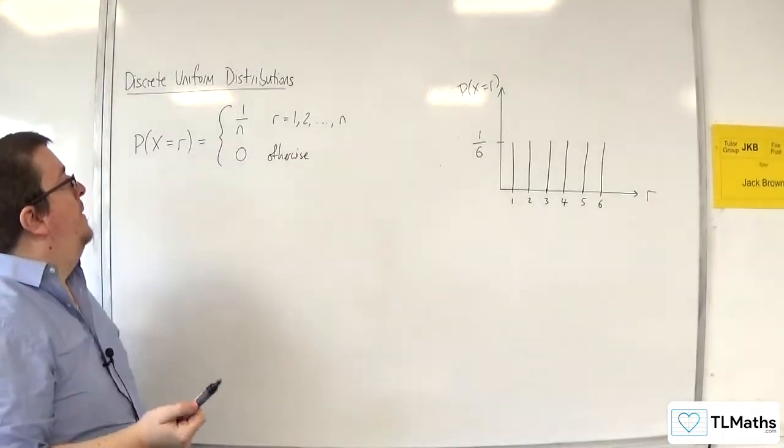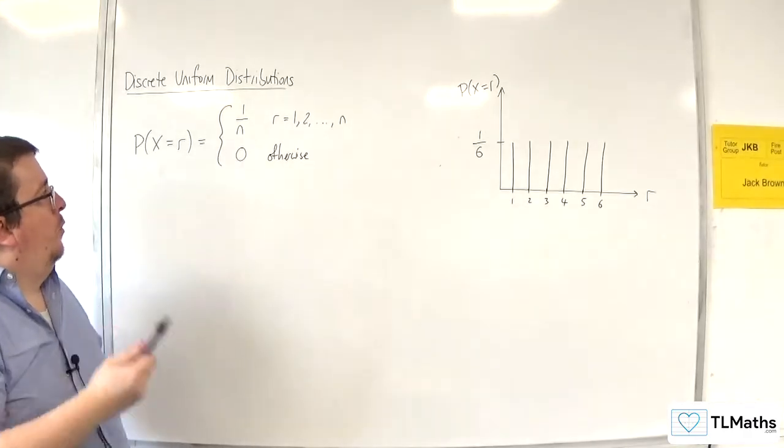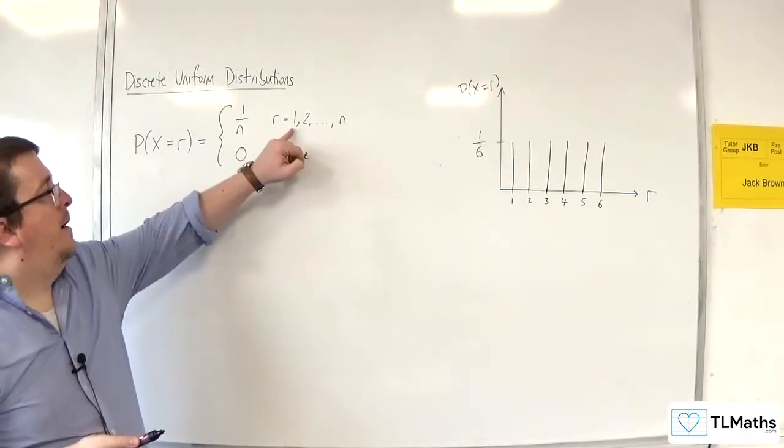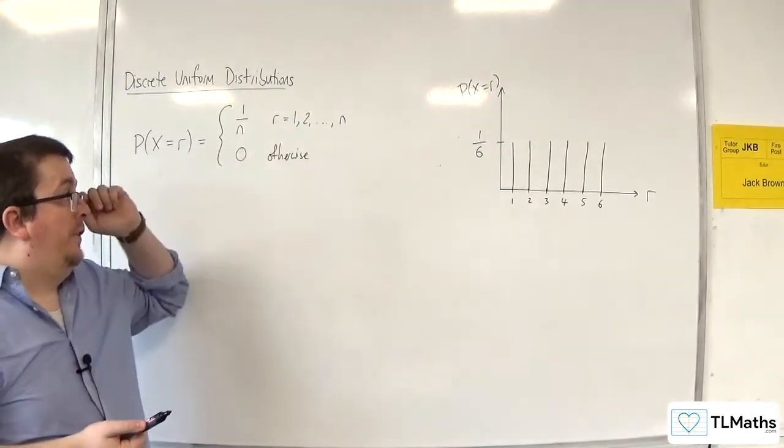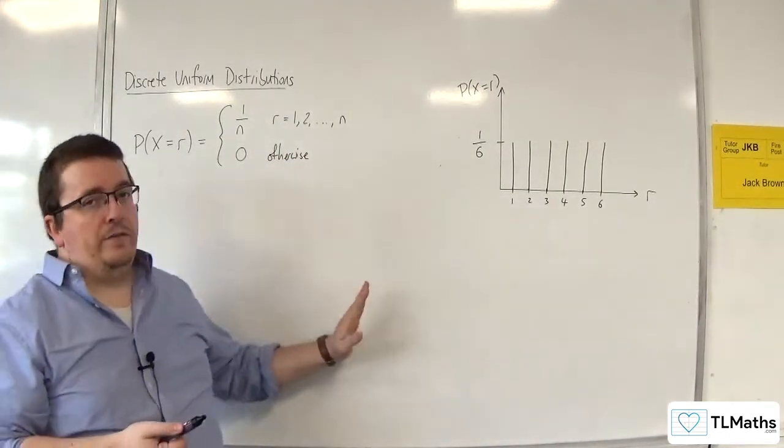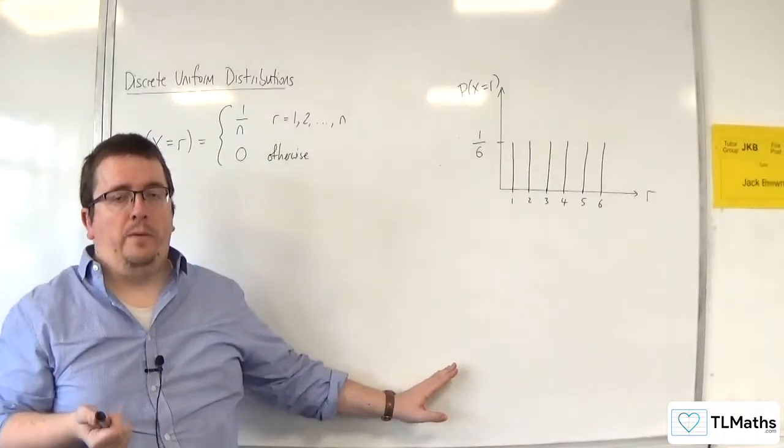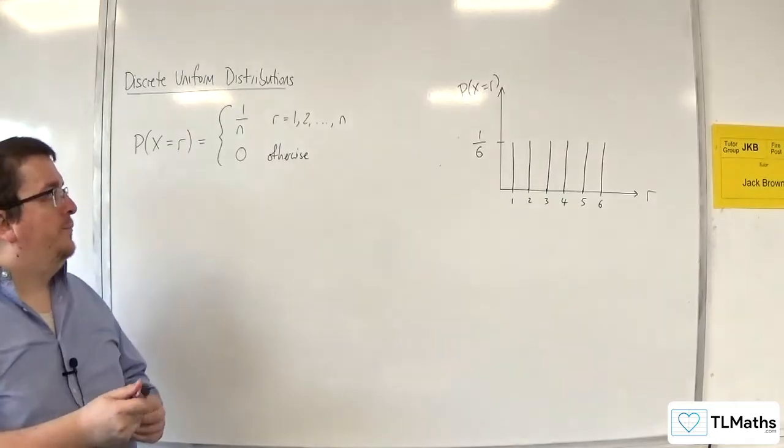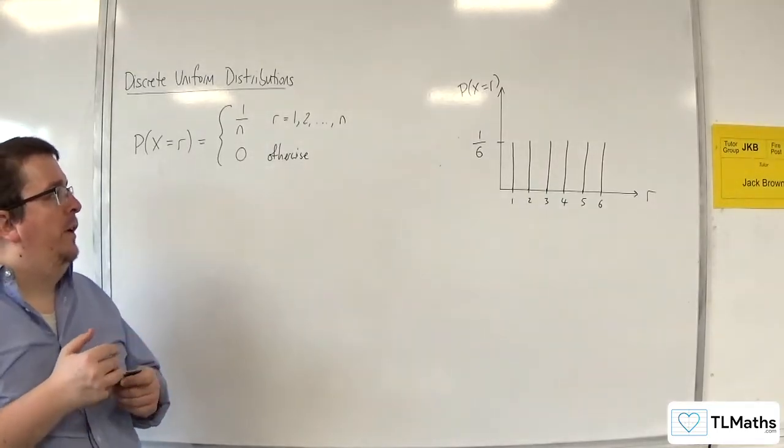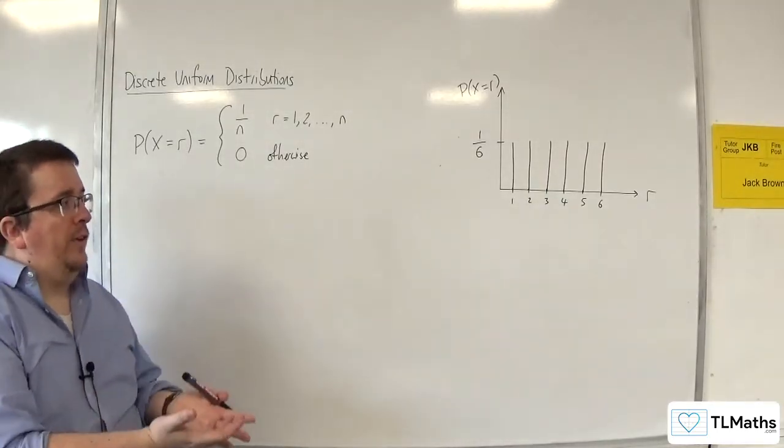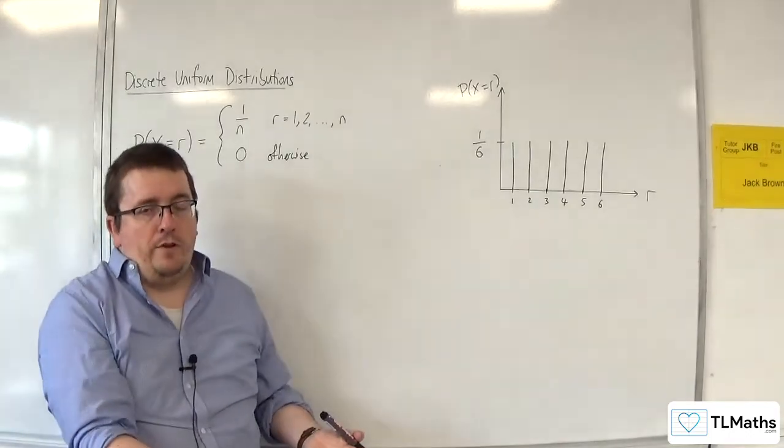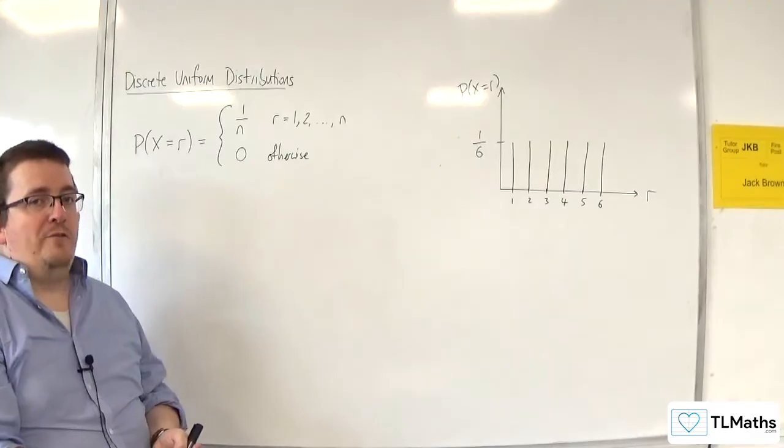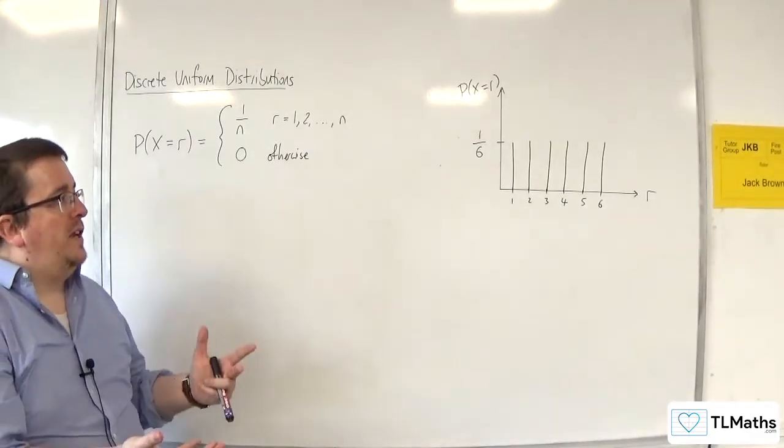Now you've got to be a little bit careful because not all discrete uniform distributions will start from 1. So it could be 10, 11, 12, 13, 14, for example. And that causes a little bit of issue as we work our way forward and makes these problems, on the surface, look like they should be very straightforward, but some of the exam questions can be quite fiddly. Okay, so just giving you a heads up.